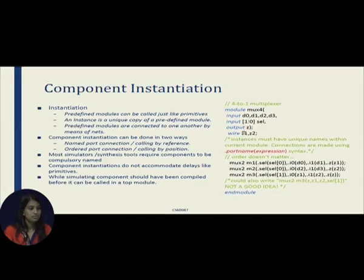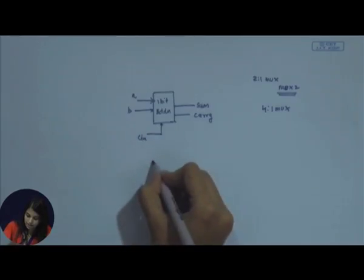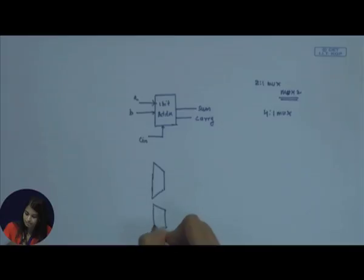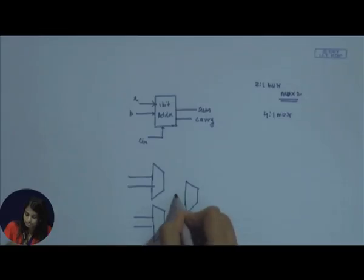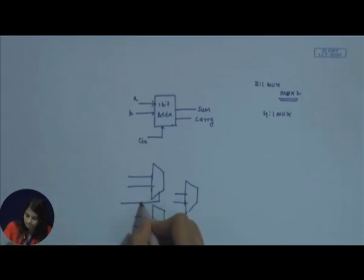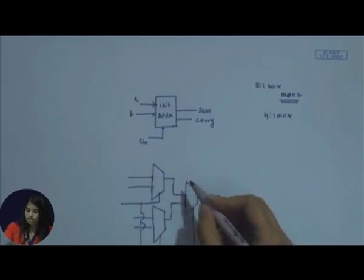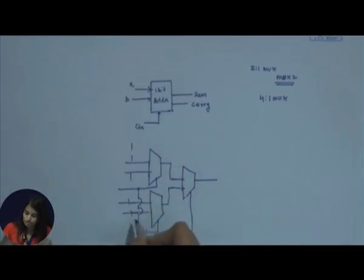In this example I am using mux2 as a predefined module inside the top module mux4. If I draw the diagram, we have three 2-to-1 muxes used to create a 4-to-1 mux. In a 4-to-1 mux we have inputs d0, d1, d2, d3 and an output z.